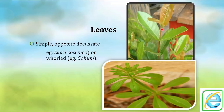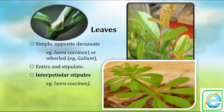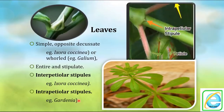Opposite decussate is found in Ixora. In some plants the leaves are in a whorl condition — leaves arranged at the nodal point in a circular manner with equally distributed spaces between them. That is seen in Galium. The margin is completely entire and stipules are present. Two kinds of stipules are found: interpetiolar stipule and intrapetiolar stipule.